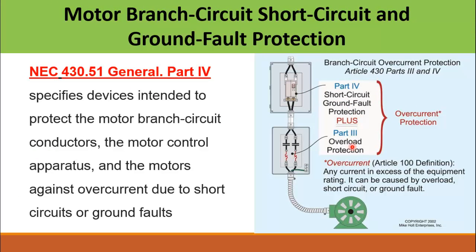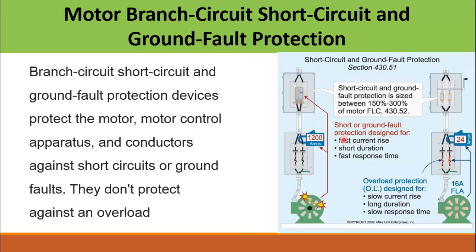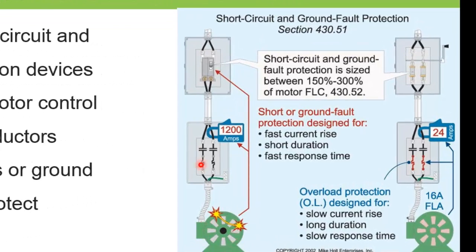In a previous video I also explained how to properly select the overload protection for motors according to the NEC standard. NEC 430.51 general specifies the devices intended to protect the motor branch circuit conductors, the motor control apparatus, and the motor against overcurrent due to short circuit and ground fault. This standard does not cover overload protection, since that is already provided through the overload device installed with the circuit breaker. Unlike motor circuits, in lighting circuits we don't normally install an overload device such as overload relays — the circuit breaker provides both overload and short circuit protection. But in motor circuits we normally install the circuit breaker and a separate overload device.